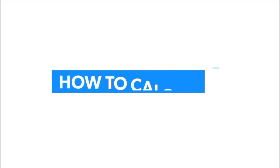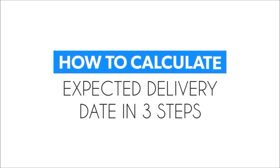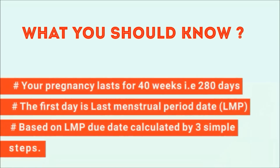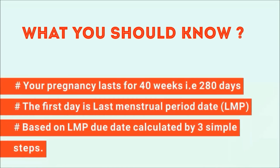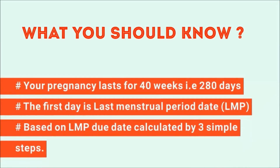Hi friends, welcome to my channel. This video is about how to calculate your delivery date or due date in three steps. Before starting with the calculation, let's see what you should know first. Your pregnancy lasts for 40 weeks, that is 280 days. The first day is your last menstrual period date, in short form that is LMP.